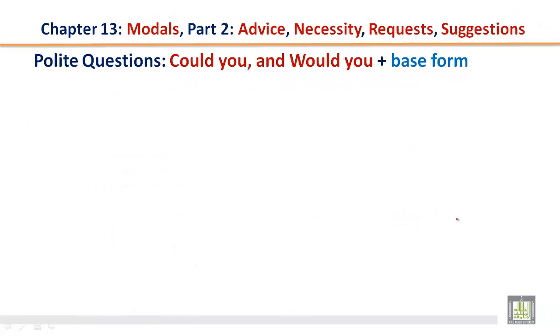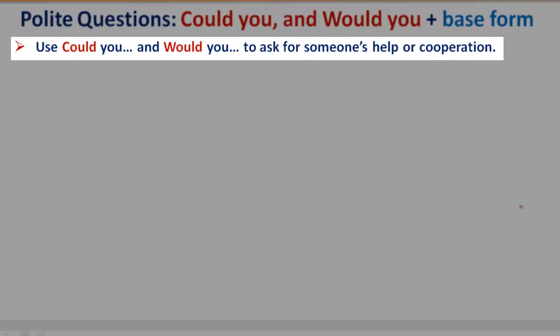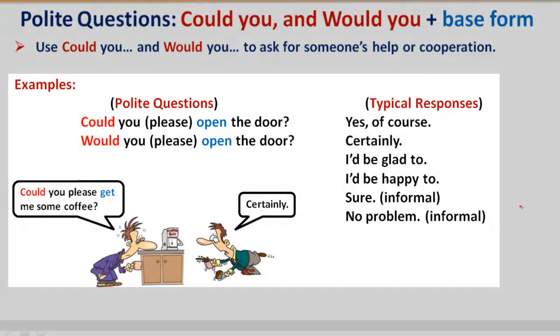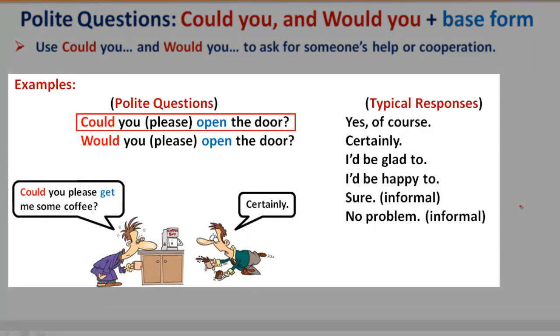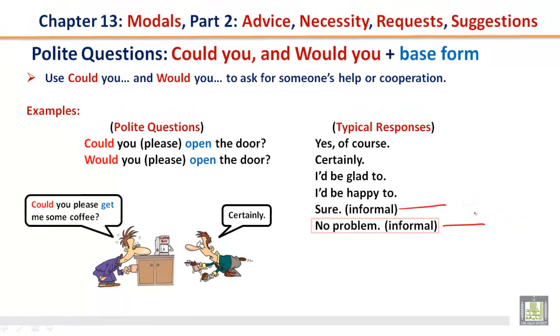Polite questions: Could you and would you plus the base form. Use could you and would you to ask for someone's help or cooperation. Polite questions: Could you please open the door? Would you please open the door? Typical responses: Yes, of course. Certainly. I'd be glad to. I'd be happy to. Sure, which is informal. No problem, which is also informal.